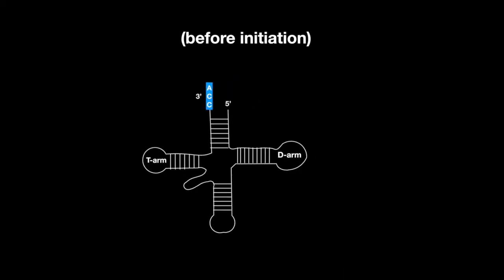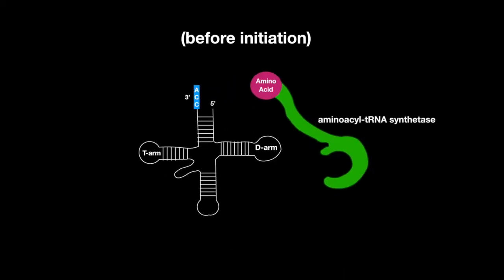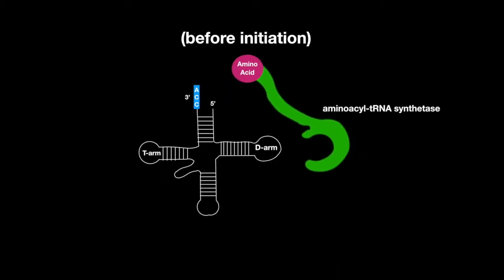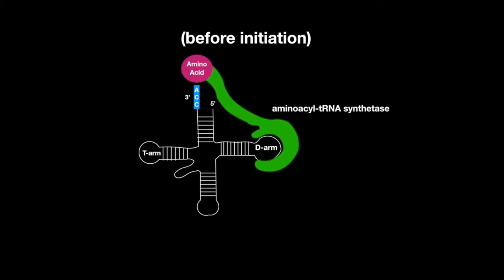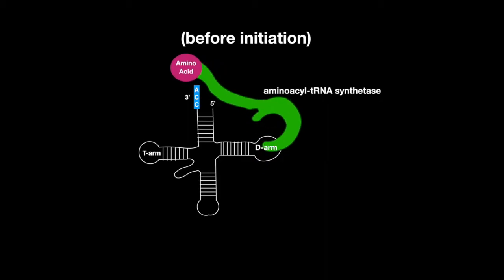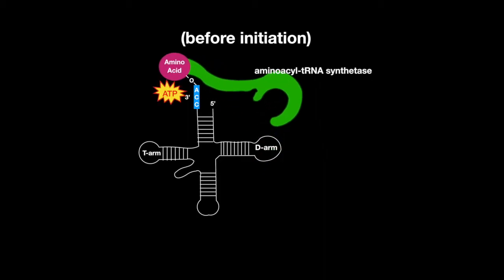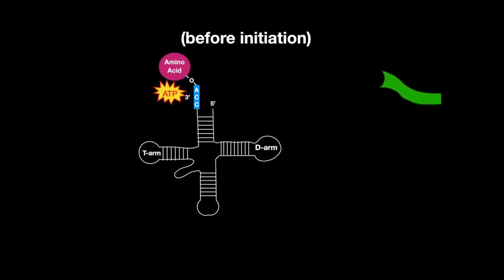Before initiation, tRNA gets charged into aminoacyl-tRNA by aminoacyl synthetase, which adds the specific amino acid with ATP hydrolysis.